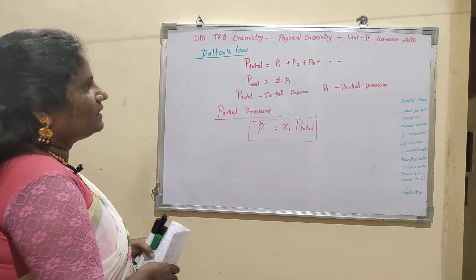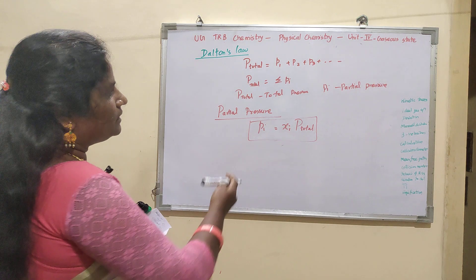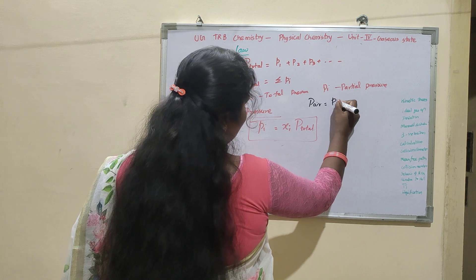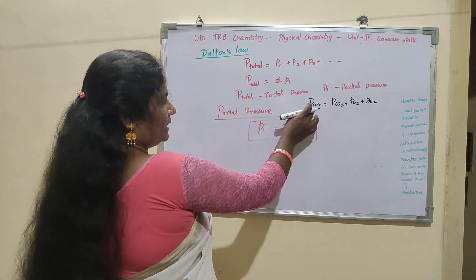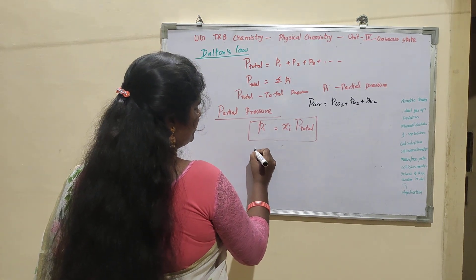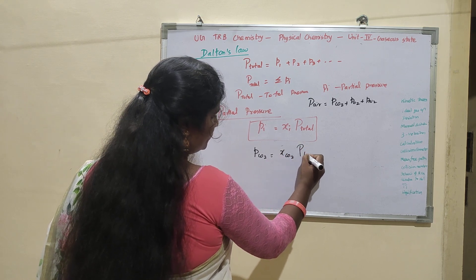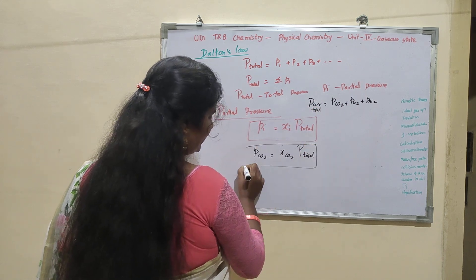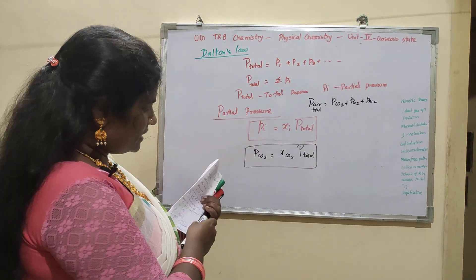So here we have two laws. For example, pressure of the total air — we have carbon dioxide, oxygen, and nitrogen. If we add the gases, the partial pressure will be added to the total pressure. For example, partial pressure of CO2: we have mole fraction of CO2 into P total, and I can calculate the partial pressure. So this is Dalton's law.